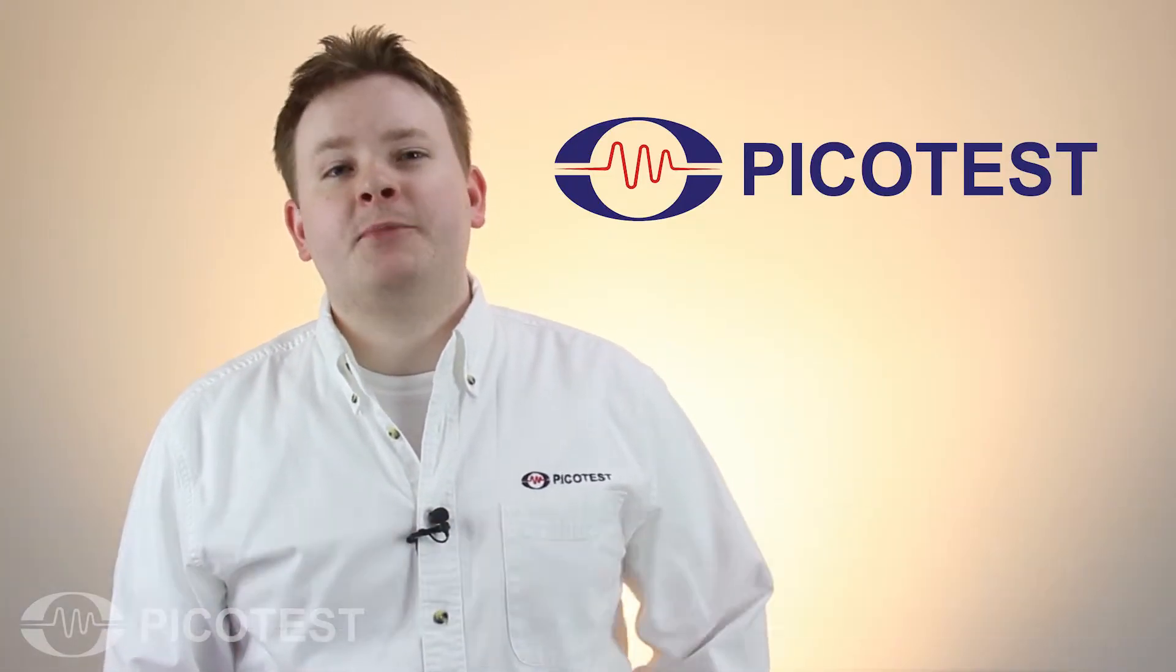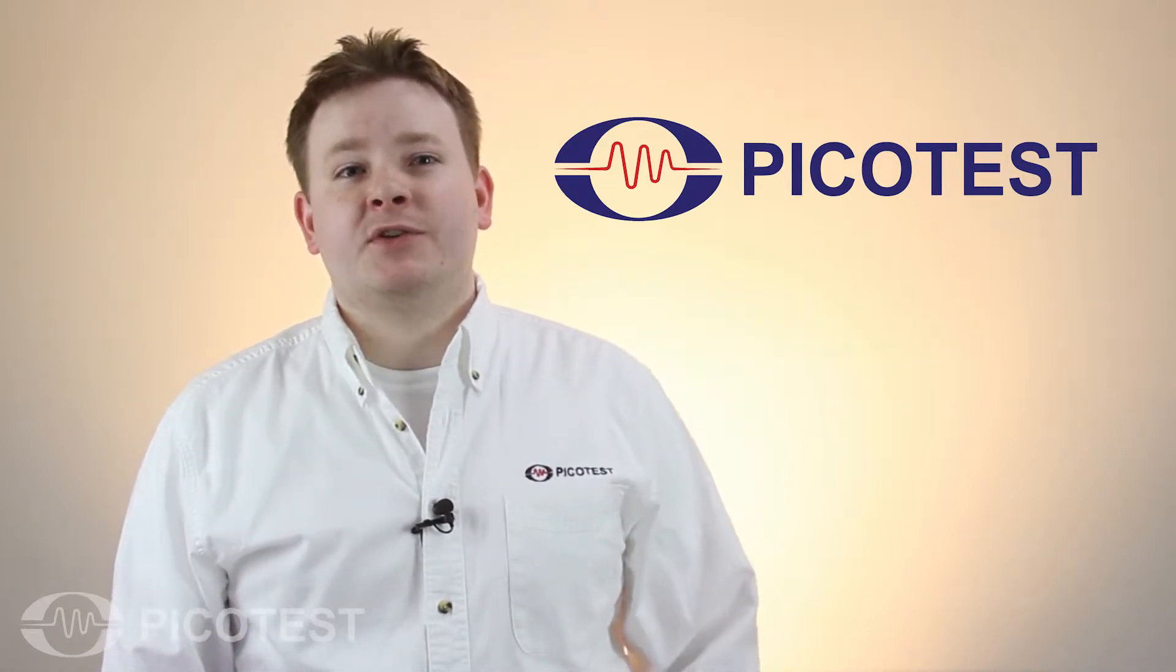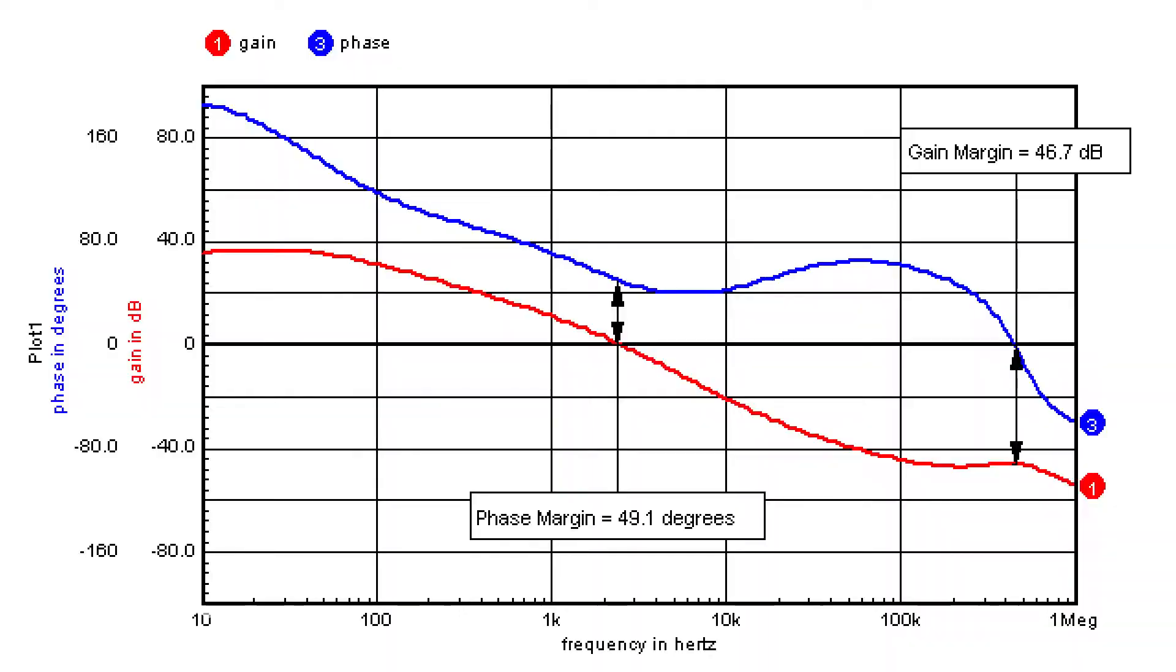Today we'll be demonstrating how to measure the stability of voltage regulators using an output impedance measurement. Phase margin is used to quantify the stability of a control system and is traditionally measured using a Bode plot.